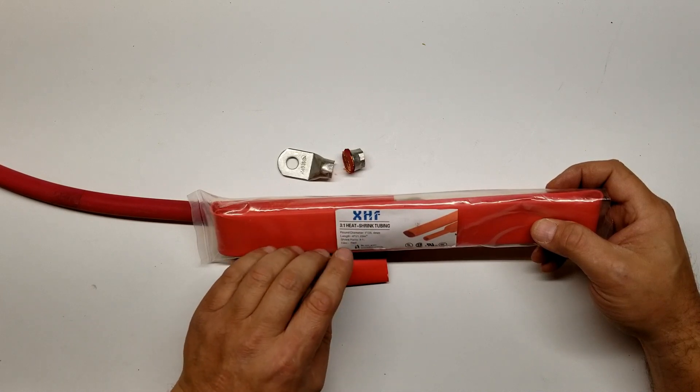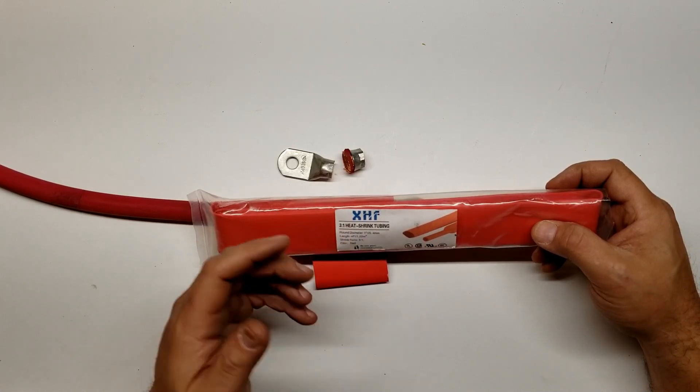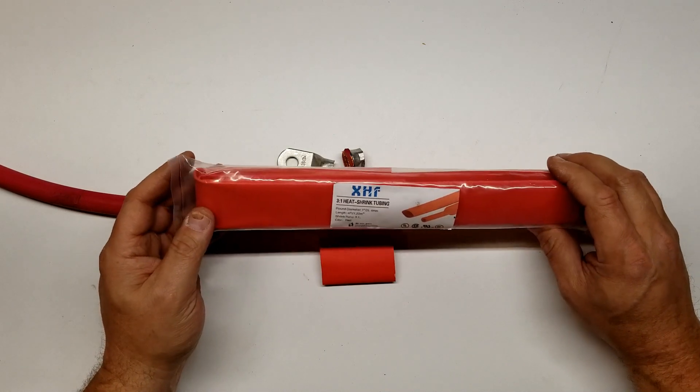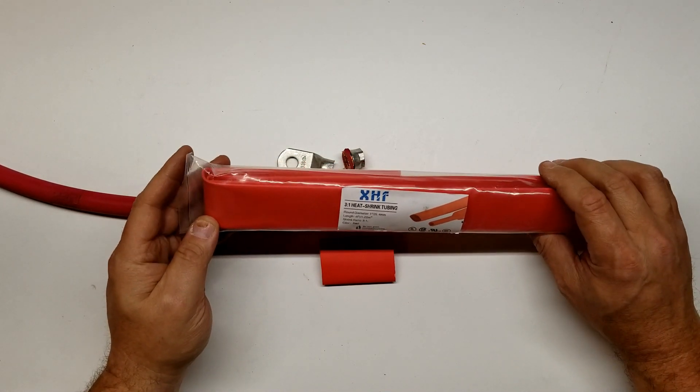The shrink tubing I got from Amazon doesn't mention it on the package really, but on the listing it said that it was adhesive lined. I like using adhesive lined shrink tubing because it helps keep moisture and oxygen out of your joint.